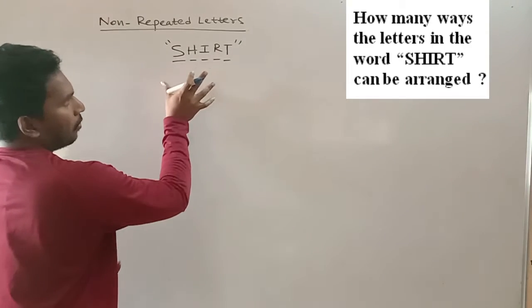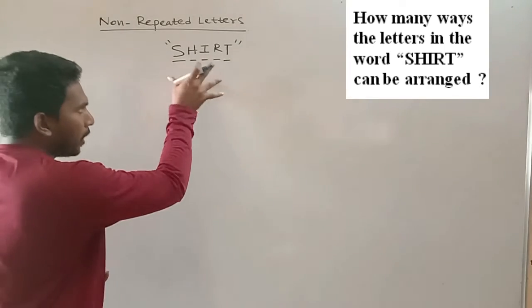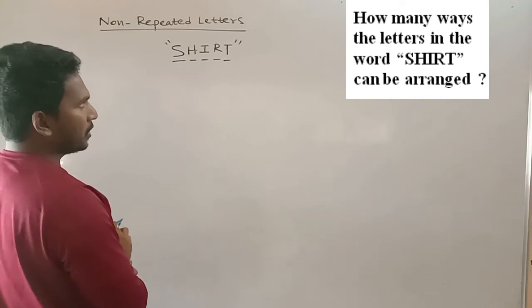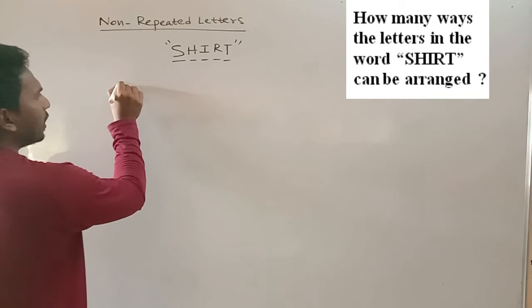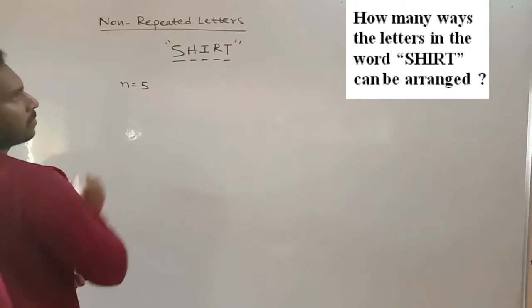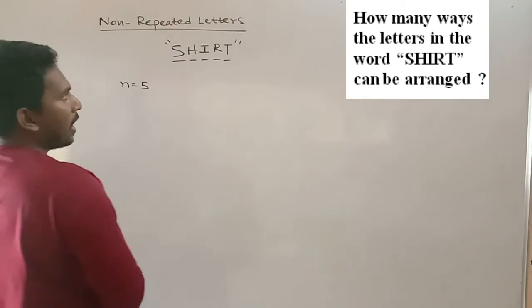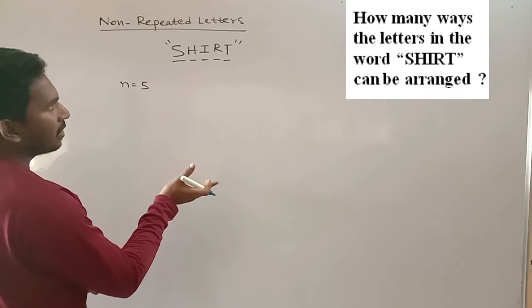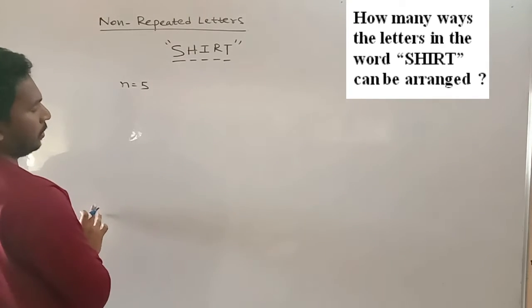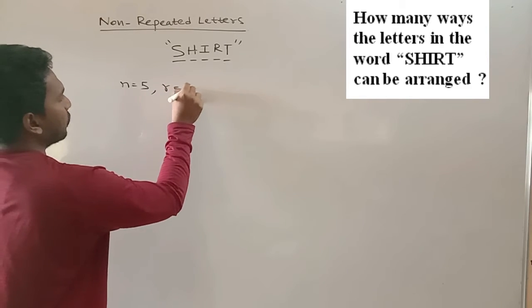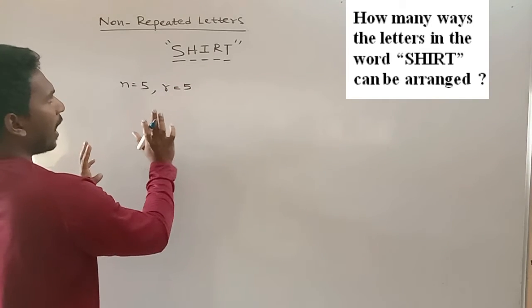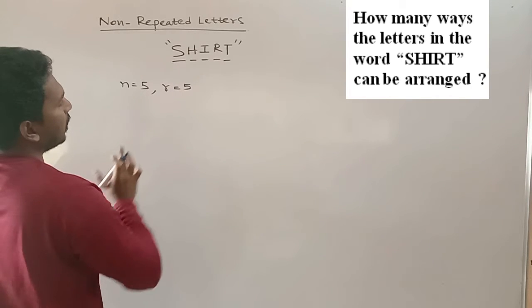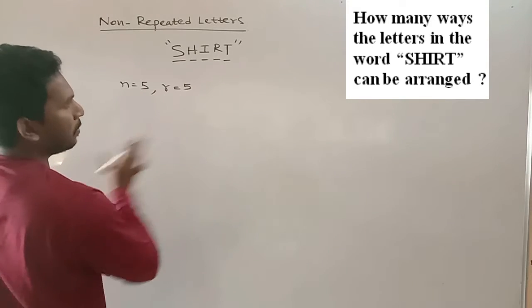So whatever the alphabets or whatever the letters that you have now, that number will not change. Only the order of arrangement will change. So here n is how much? Five, as you have five letters in the word. And even after rearrangement of the alphabets you will be having five letters only. So your r is also five. So you have to arrange the letters in the word shirt. In how many number of ways will it be possible?